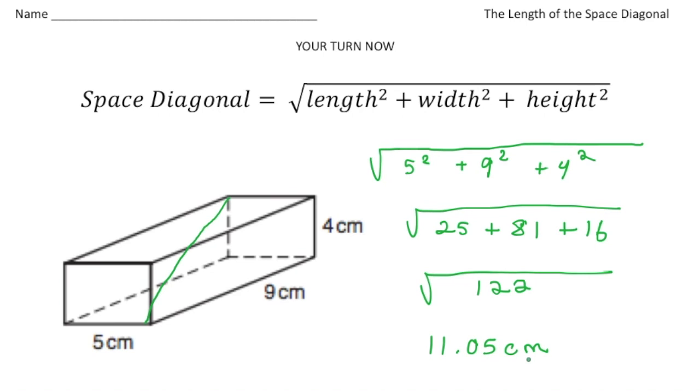So because I rounded, that's an approximation. So I'm going to give a little approximate sign, and there it is. So again, to find the space diagonal of a shape, you need to know the length, the width, and the height of the rectangular prism. And then you just plug in the values into this formula, and that's how easy it is. All right, bye-bye.